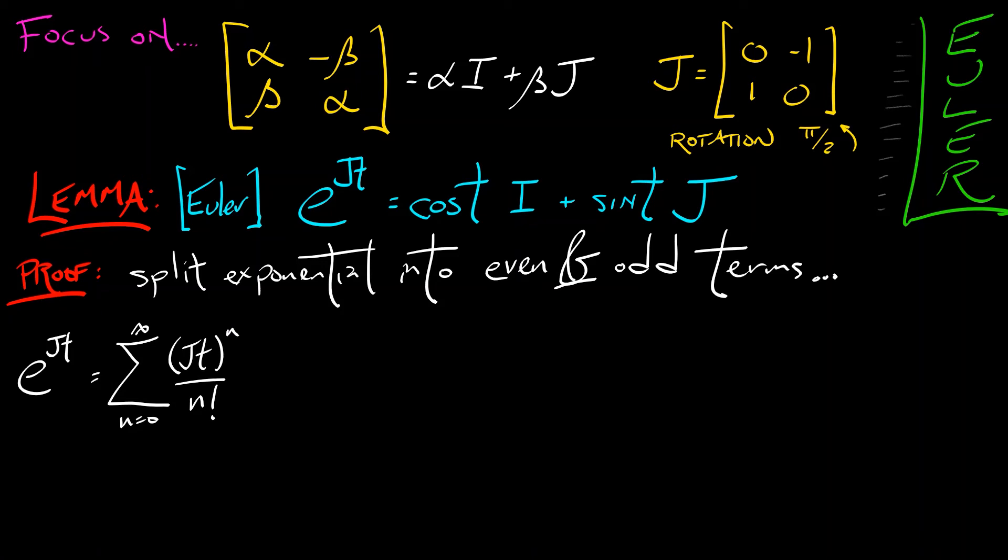If I split this up, I can take the sum n goes from 0 to infinity of JT to the 2n divided by 2n factorial. Those are the even terms. I have to add in the odd terms. The sum n goes from 0 to infinity JT to the 2n plus 1 divided by 2n plus 1 factorial.